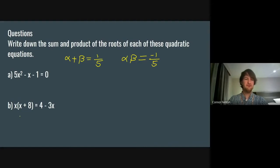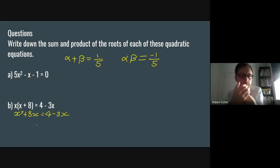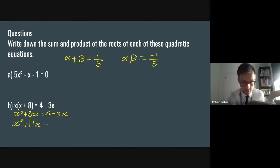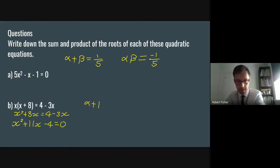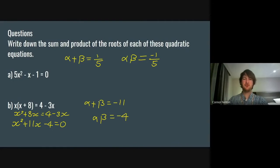For part B, we've got to expand the bracket at the front: get x² + 8x, then equals 4 − 3x. Put everything on the left — you get x² + 11x − 4 = 0. So the sum is minus 11, meaning alpha plus beta is −11. And alpha times beta is −4. Again, a bit of a nicer quadratic than the first one, but it still won't factorise nicely — much, much quicker to do it this way.